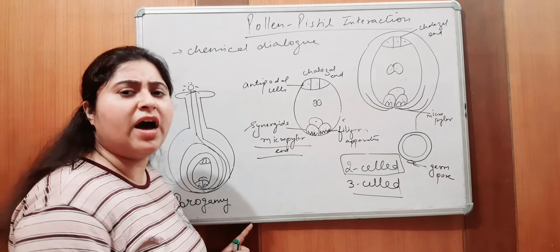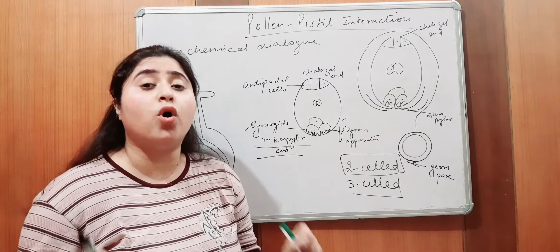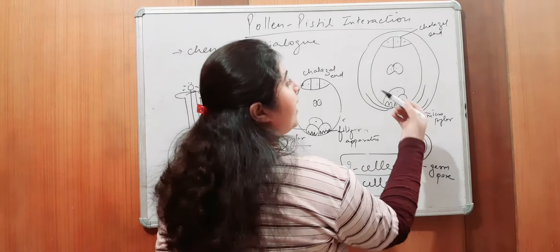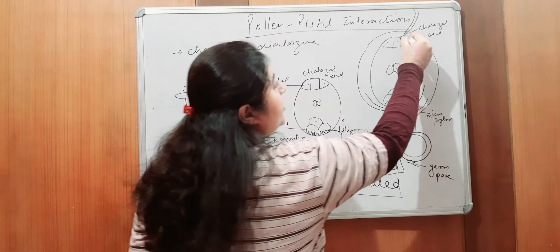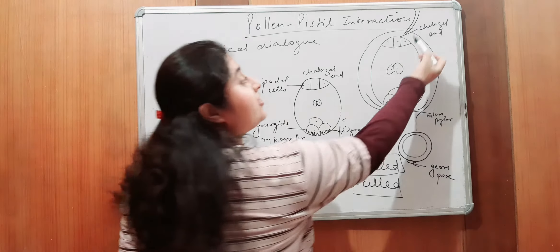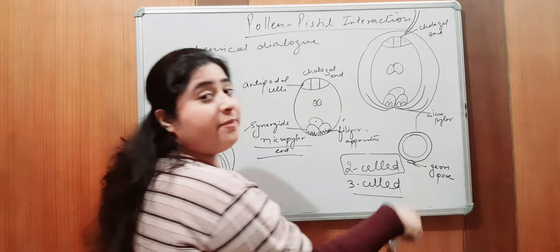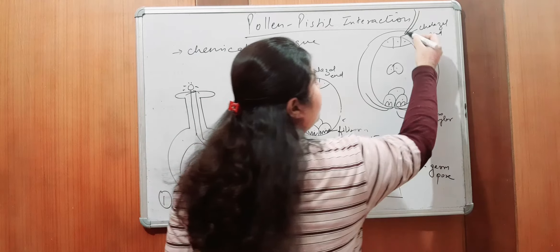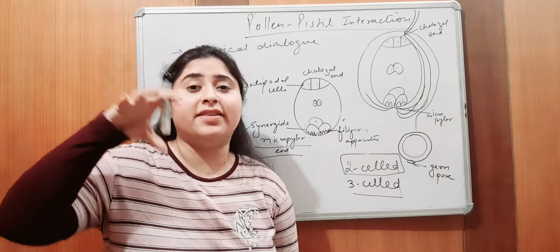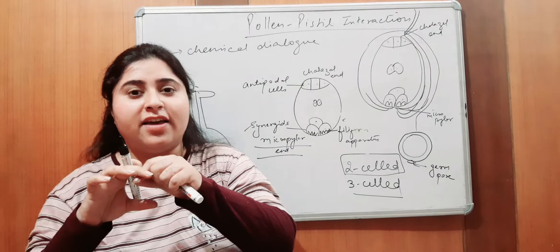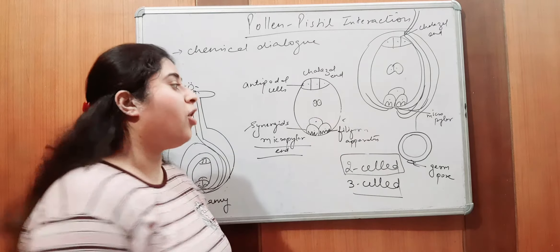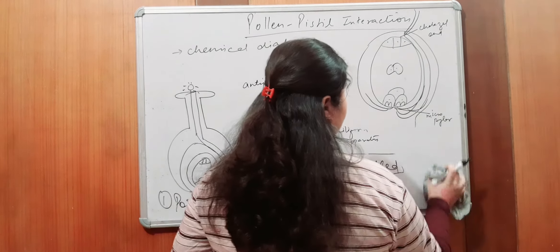And in most of the angiosperms, most of the plants, porogamy takes place. Now suppose, this is the first case of porogamy. Suppose the pollen tube is entering but not through the micropylar, through the direct entering through the chalazal end. If this chalazal end enter into the ovule through chalazal end but female gametophyte embryo sac through the micropylar end, in that case that process will be called as chalazogamy.